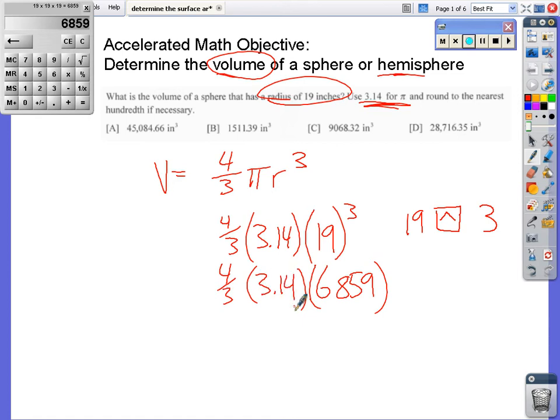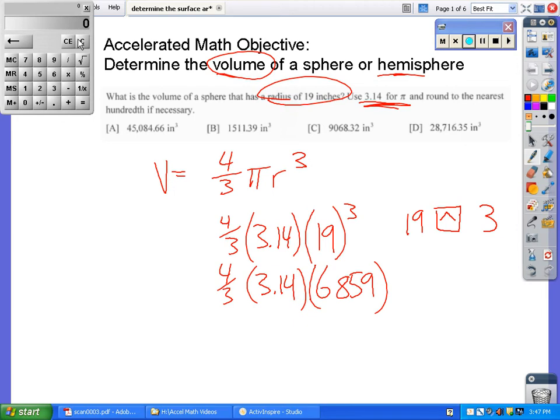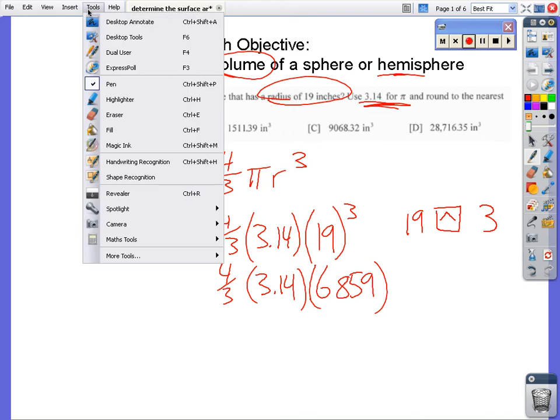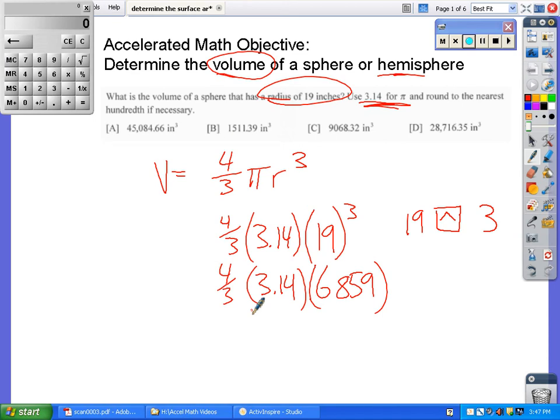The 4/3 is a little weird too, and I don't have a fraction function on here. Let me go to my tools and get the other calculator. Okay, so I happen to know that 4/3 is 1.333333. I could have done 4 divided by 3 to get that answer. That's the 1.3 repeating. Now, times that number times 3.14 and times 6859. Sorry for all the confusion here.